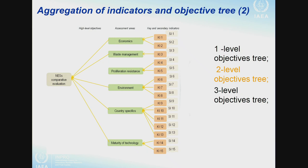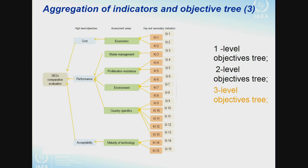Even these areas may be too many, so sometimes participants decided to aggregate them into high-level objectives — for example, cost, performance, and acceptability. Now you see a three-level objective tree. You need to assign weights to each level: to high-level objectives, to assessment areas, and to key indicators. It is easy to do and easy to interpret the result with such an approach. You can choose one level, two levels, three, or even four levels.